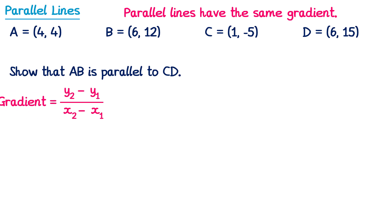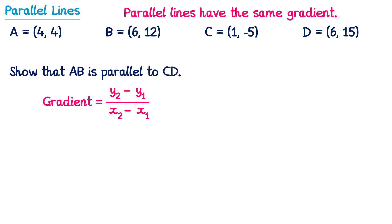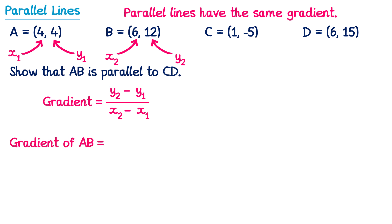To find the gradient when we have coordinates, we use the gradient formula. I'm going to start with the gradient of AB, so I'll label up its coordinates. Let A be the first point, so x1 is 4 and y1 is 4. B is the second coordinate, so x2 is 6 and y2 is 12. Substituting into the formula: gradient of AB equals y2 minus y1 over x2 minus x1, which is 12 minus 4 over 6 minus 4, giving 8 over 2, which equals 4.